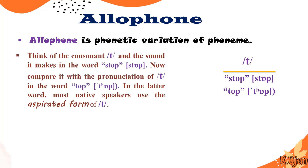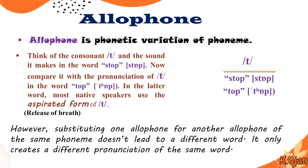Think of the consonant /t/ and the sound it makes in the word stop. Now compare it with the pronunciation of /t/ in the word top. In the latter word, most native speakers use the aspirated form /tʰ/ — that is, when there is a puff of air released from the mouth. Substituting one allophone for another allophone of the same phoneme doesn't lead to a different word; it only creates a different pronunciation of the same word.